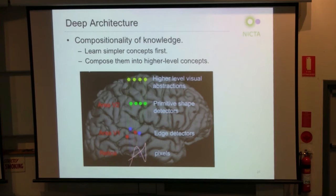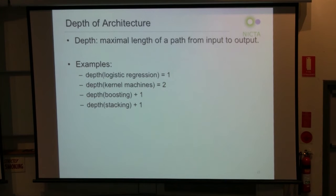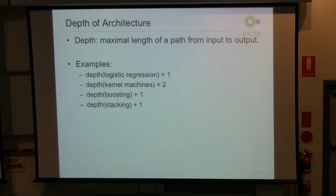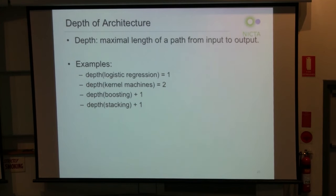The definition of depth we use is the maximum length of path from input to output. For the encoder function for the sentiment problem, that would be depth one. Many machine learning models we use nowadays are actually shallow — logistic regression simply maps input to output, so depth one. Kernel machines are more complex: the kernel function is one kind of input layer computing similarity between data points, then a linear combination of kernel functions gives output — that's two layers. Boosting and stacking, as meta-learners, simply add one extra layer on top of the base learner.